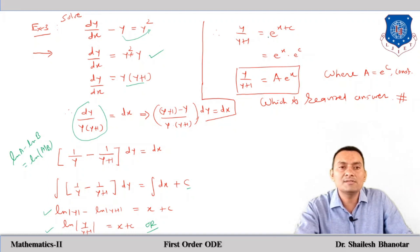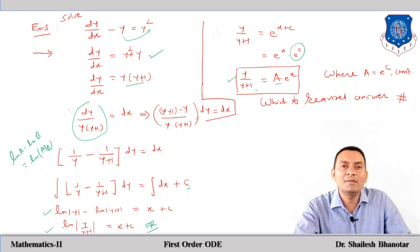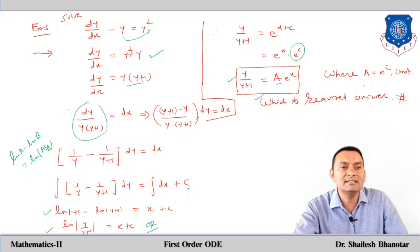Taking the exponential of both sides to remove the logarithm: y/(y+1) = e^(x+C) = e^x · e^C. Since e^C is an arbitrary constant, we write it as A. Therefore y/(y+1) = A·e^x, where A is the arbitrary constant. Since the order is 1, this is the general solution.